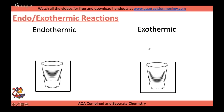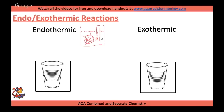The next required practical is endo and exothermic reactions. In an endothermic reaction, it will take in heat from the surroundings, so the reading on the thermometer will go down — there will be a temperature decrease in the surroundings. In an exothermic reaction, it is giving out heat to the surroundings, so the temperature on the thermometer is going to go up because it's measuring the surroundings receiving heat from the reaction.